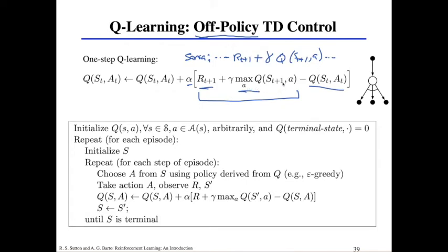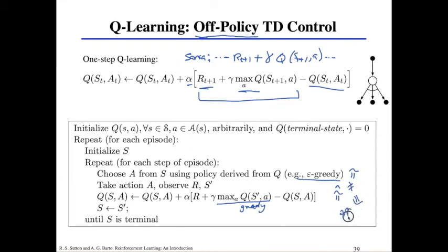The action assumed for the next step is greedy, not epsilon-greedy. But that's not the policy you're actually following — when you choose your action in the world you use epsilon-greedy, but when you update you use greedy. You'll never assume deviating from the best value in your model, but in reality you will explore. That's why it's off-policy: you're updating your model with a policy that doesn't match the one you're actually following.